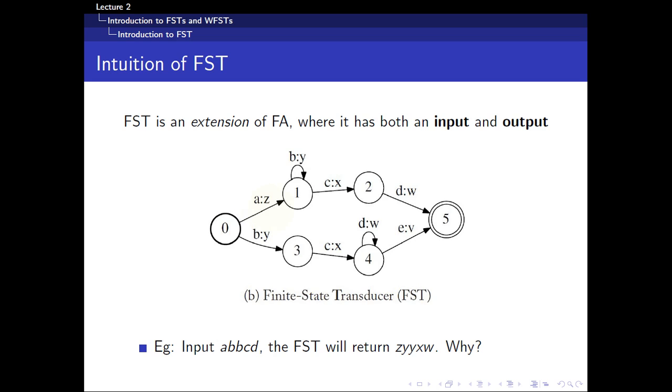For example, if you consider the path 0, 1, 1, 2, 5, this path will require an input of a, b, b, c, d, and it will return an output of z, y, y, x, w.